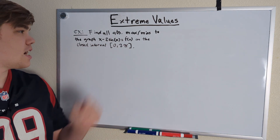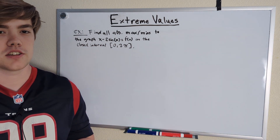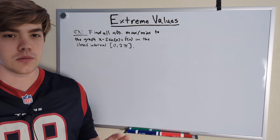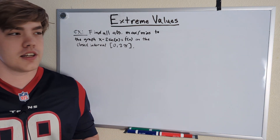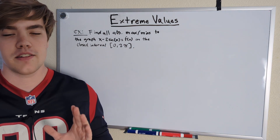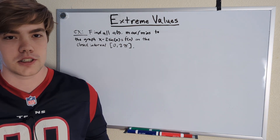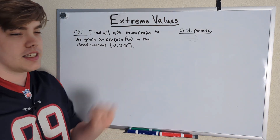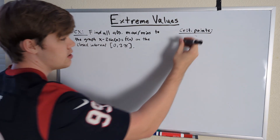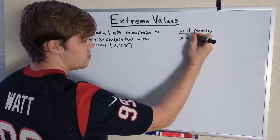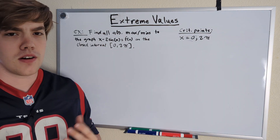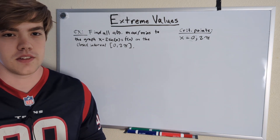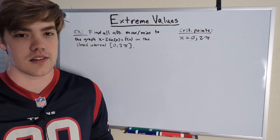Let's do one example problem. We need to find all the absolute maximum and minimum values of the function f(x) = x minus 2 sine of x across the closed interval [0, 2π], and we're going to solve this without graphing. First, based on the Critical Number Theorem, the only critical points are wherever F prime of x is equal to zero or doesn't exist. We also know every endpoint is a critical point, so we already have two: x = 0 and x = 2π. We need to find more, so let's take the derivative of f(x) = x minus 2 sine of x.